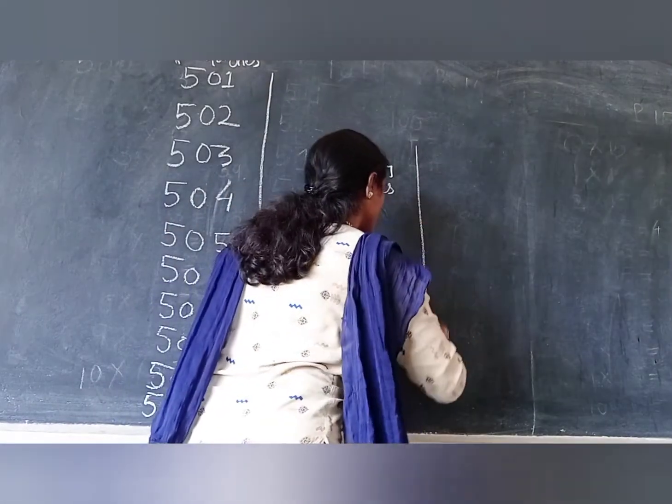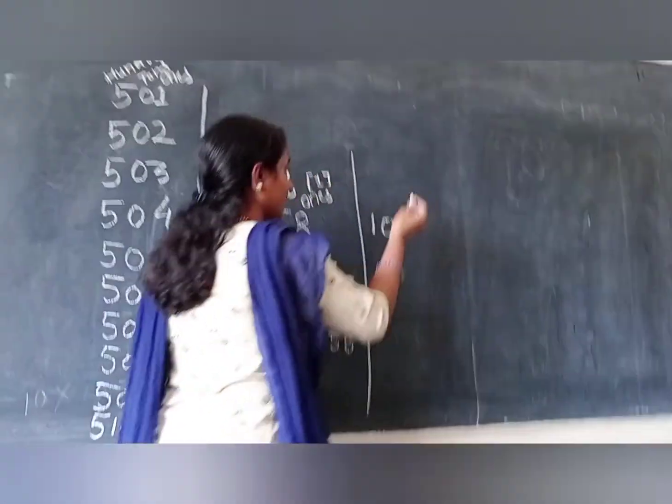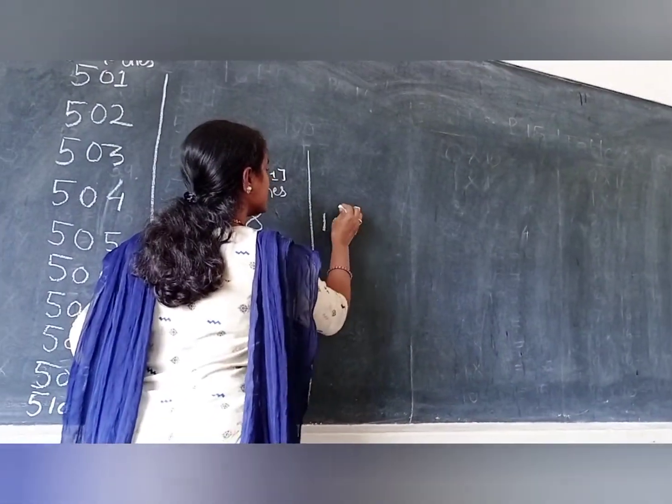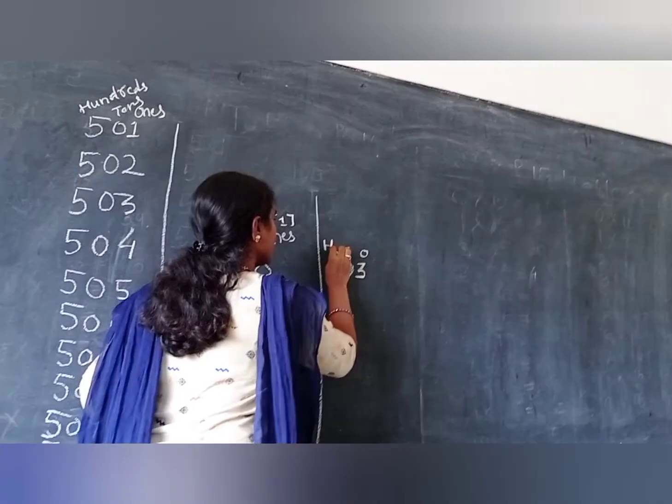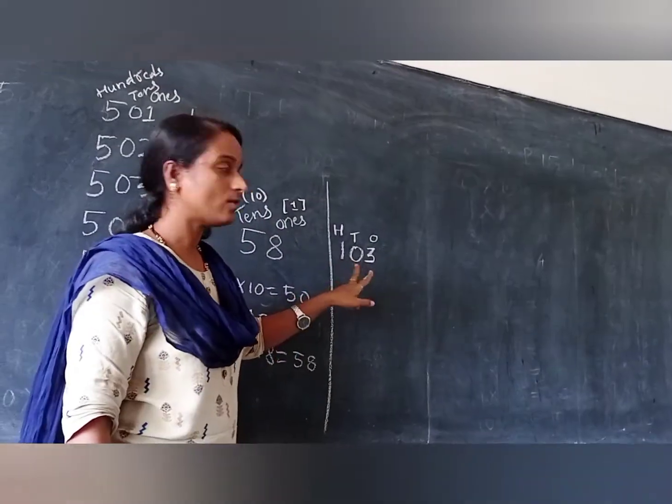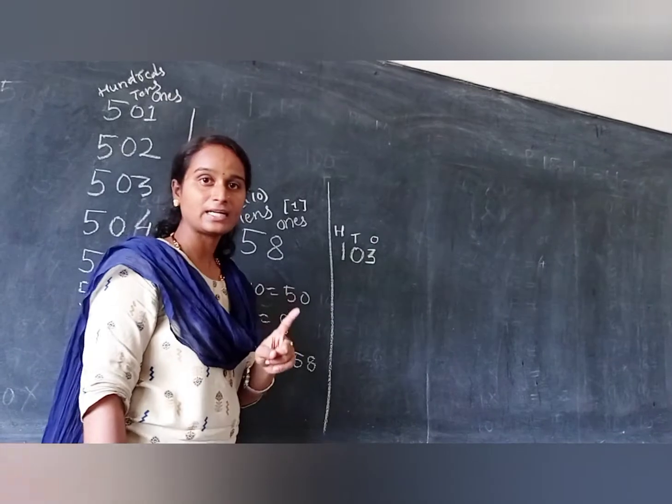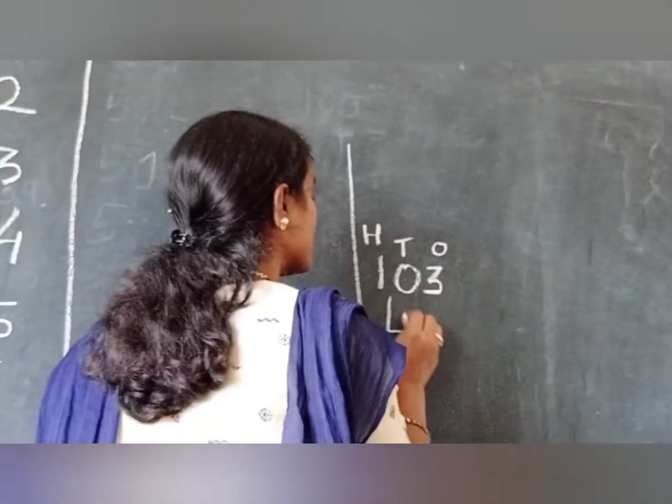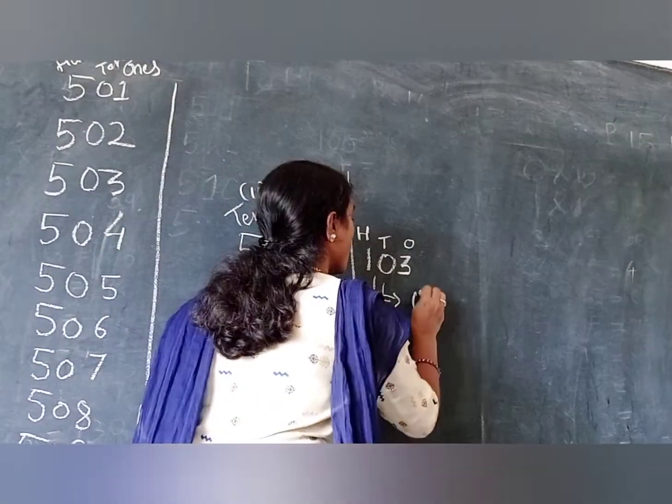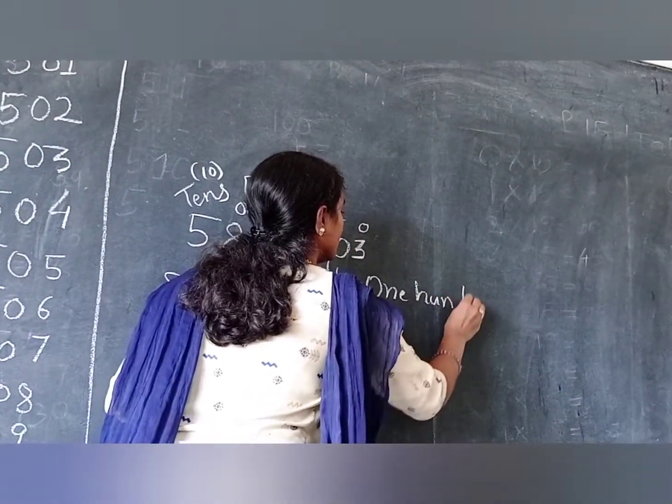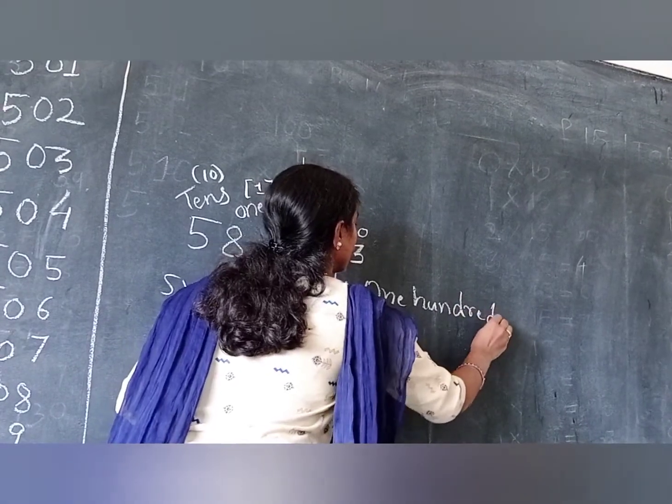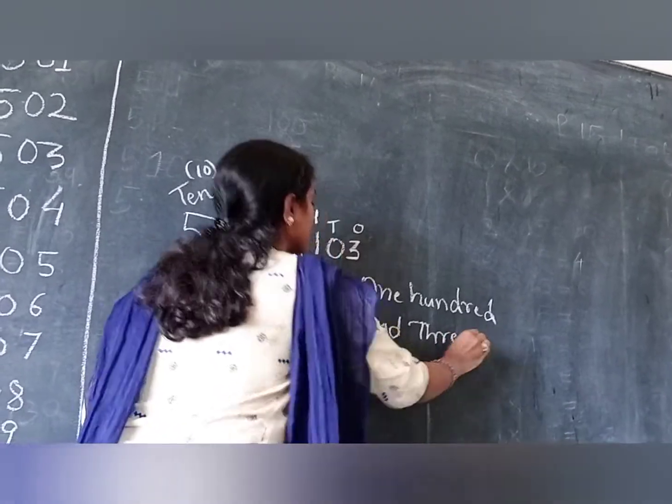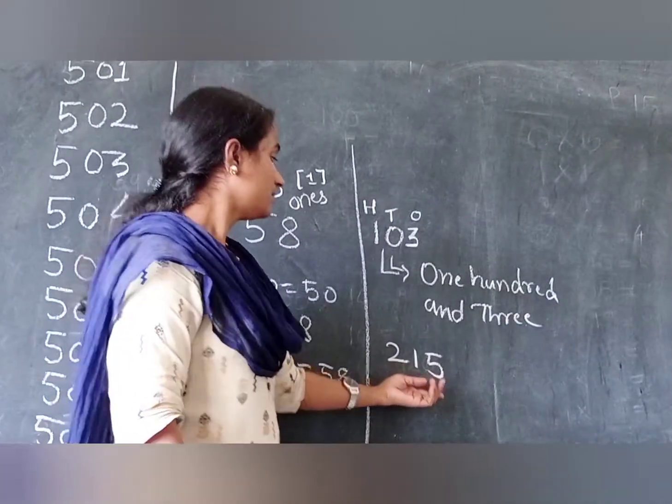Now, 103. Here, let us write the place values: 1's, 10's, 100's. In the place of 100's, how much I have? 1. So, 100 and 3. If you want, you can write that as 100 and 3.